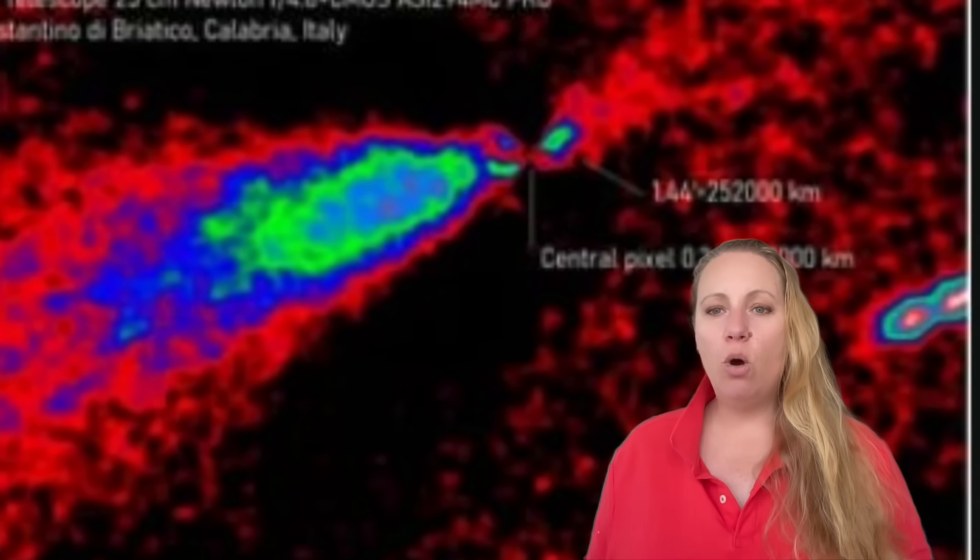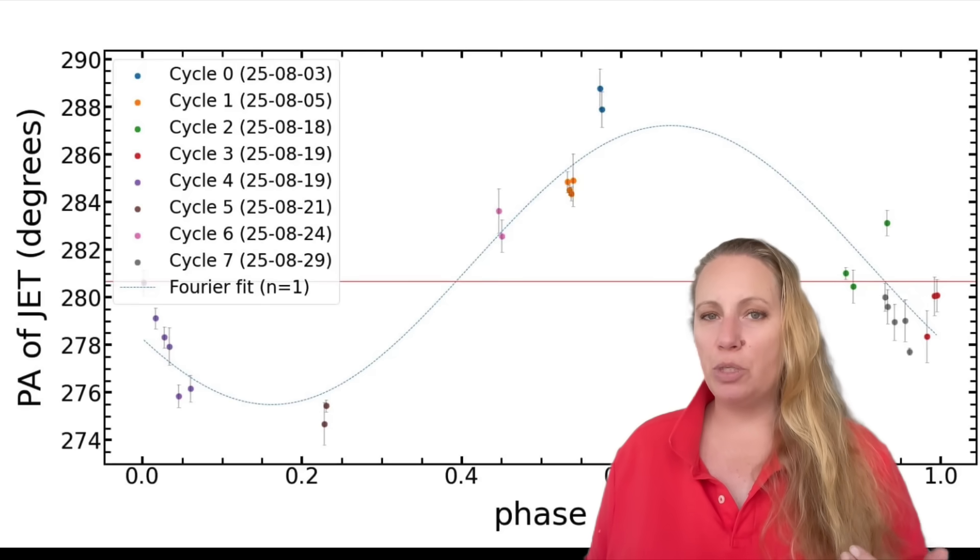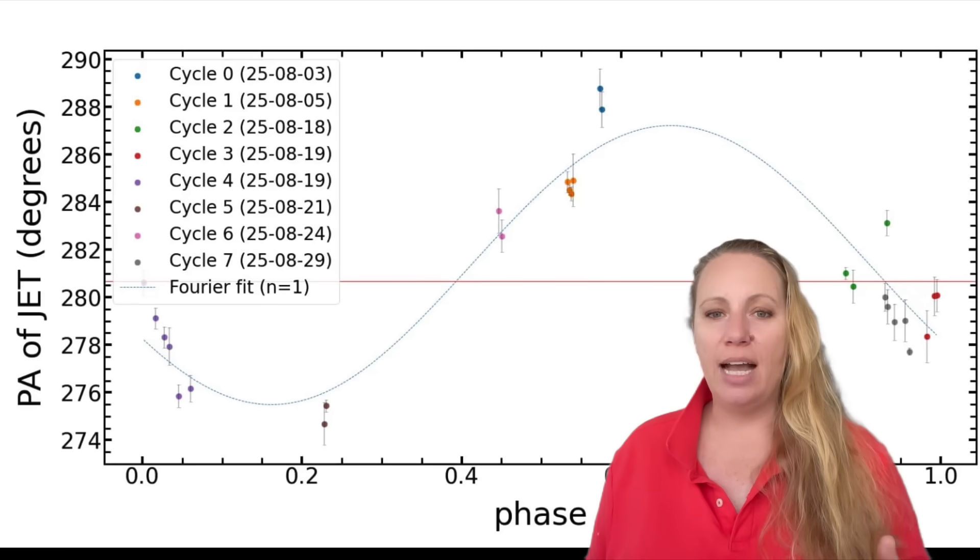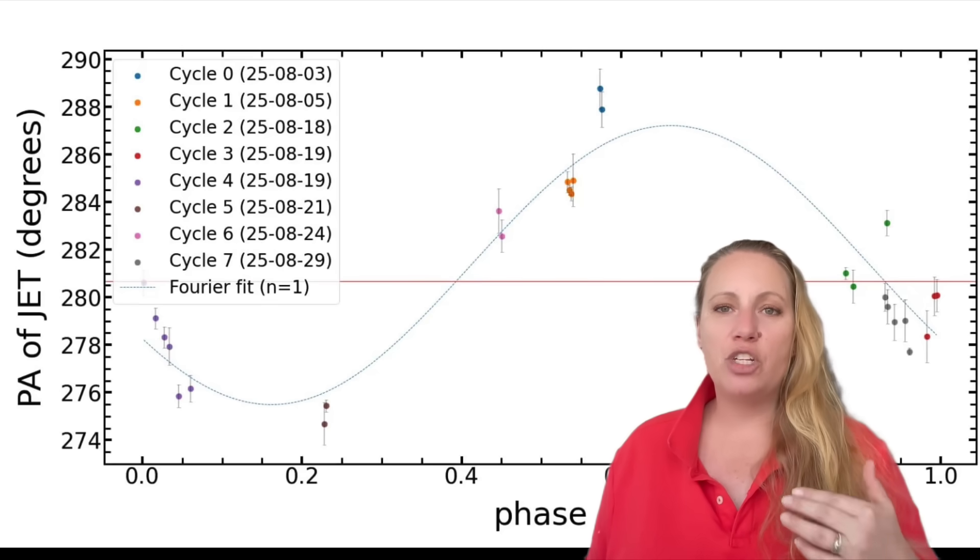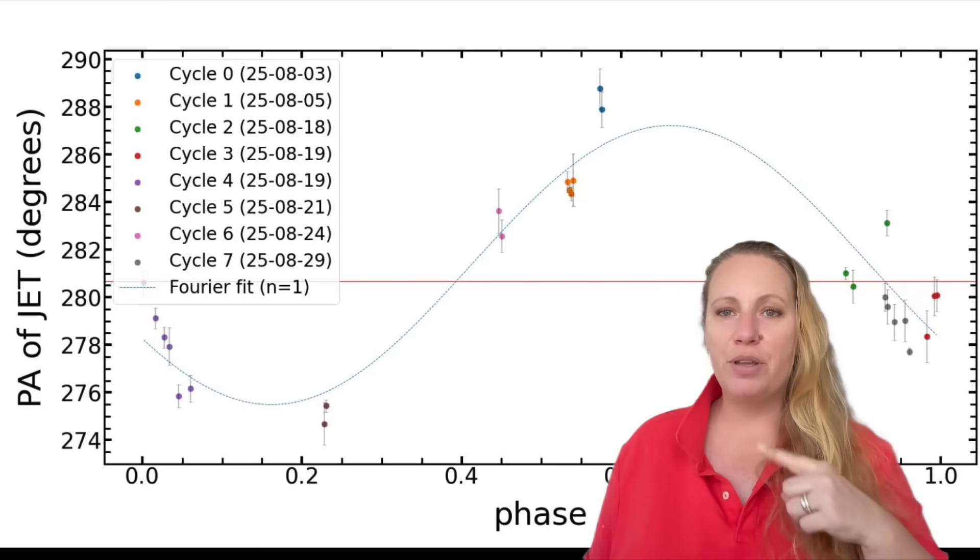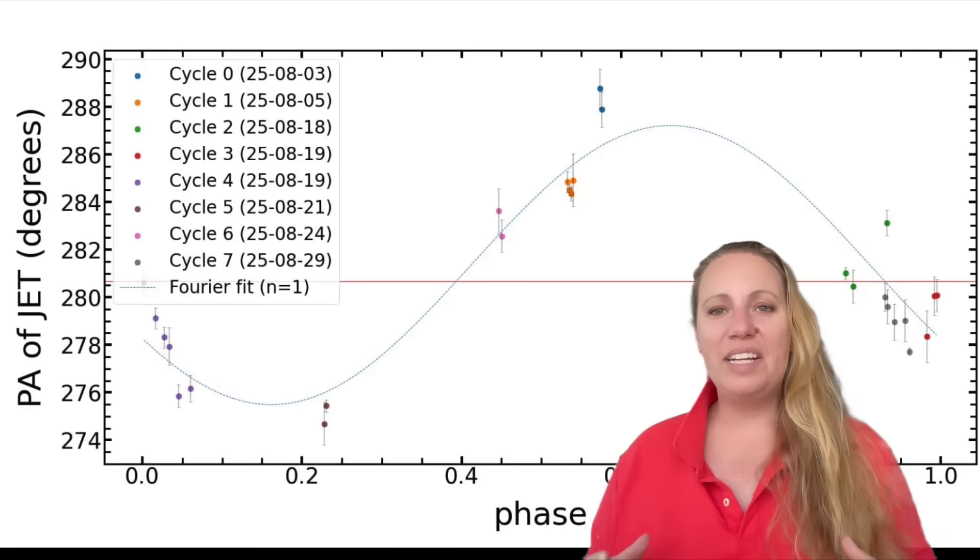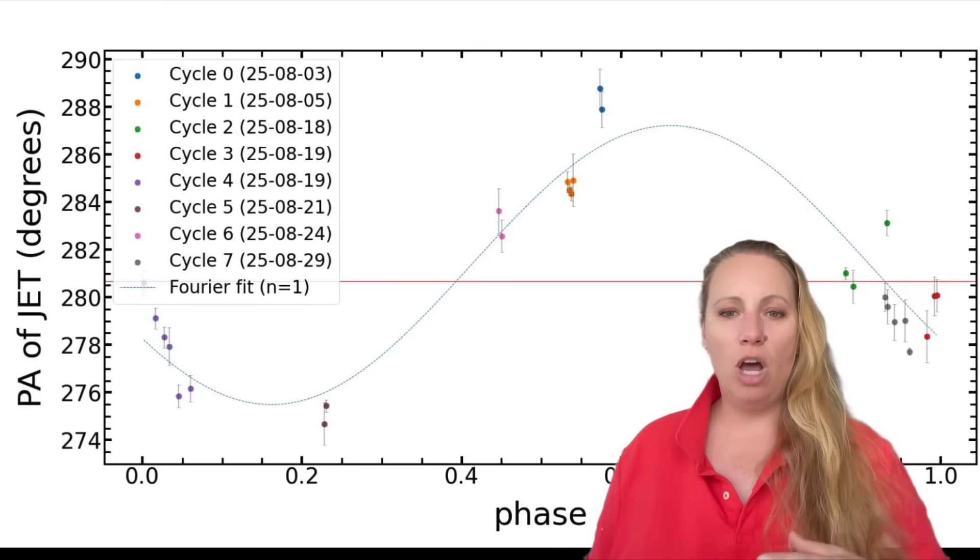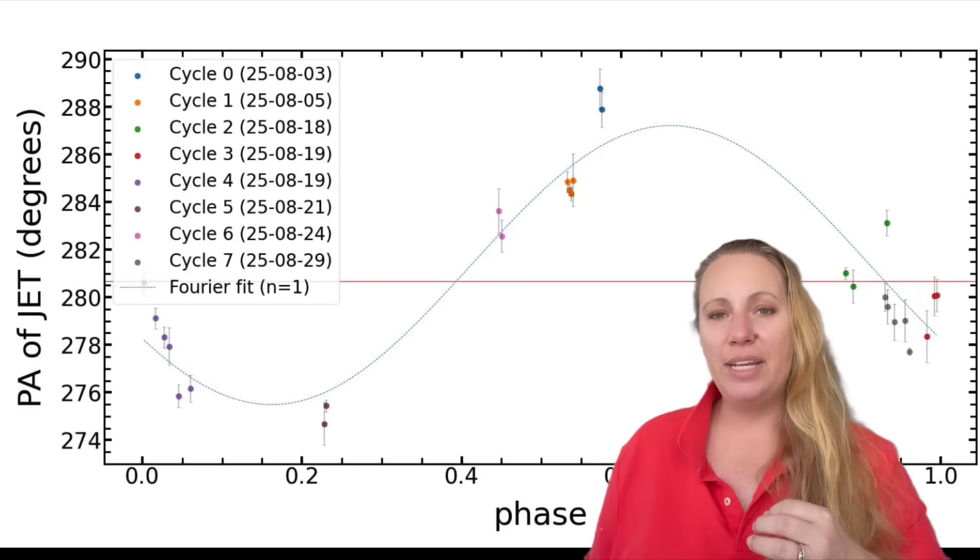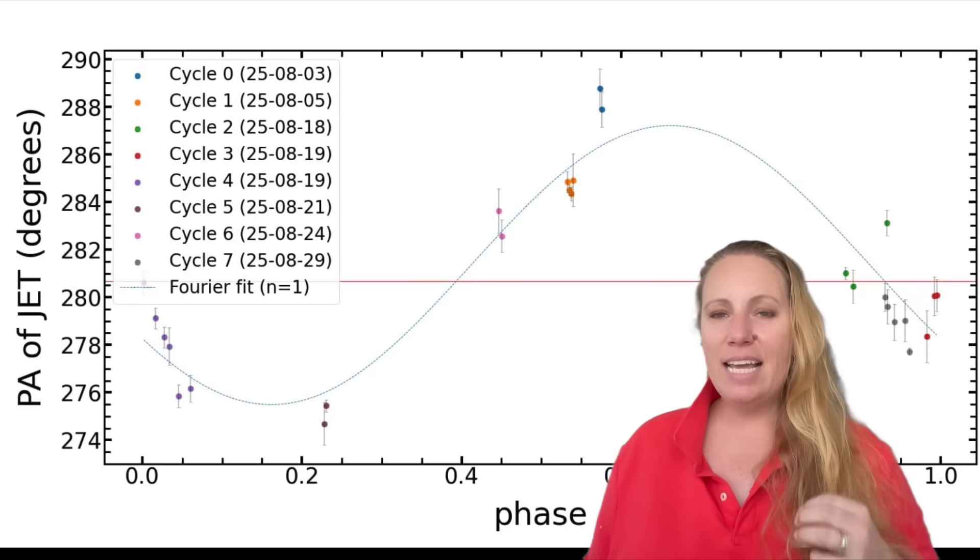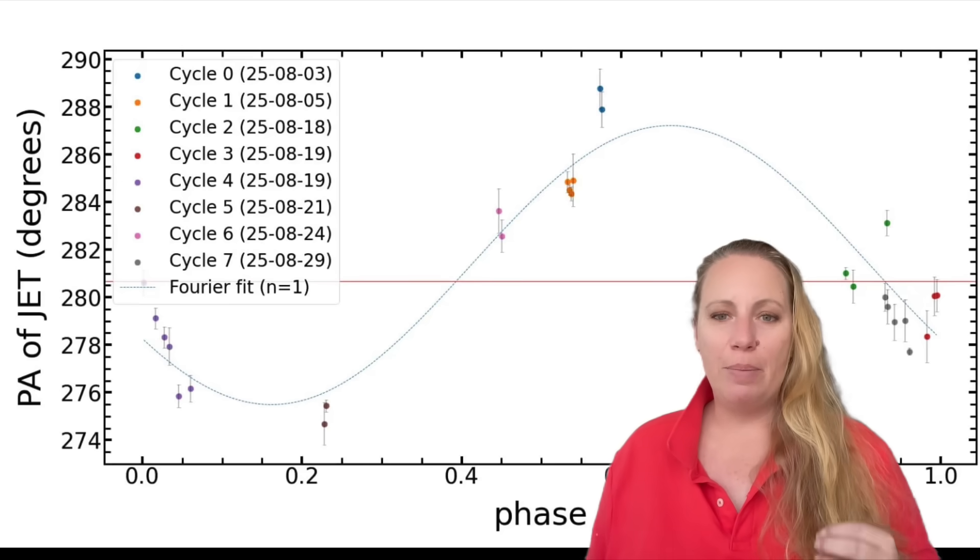Let's have a quick look at the red horizontal line. The red line is the average position angle. This represents the projected direction of the rotation axis of 3i Atlas on the sky. In other words, this is the average spin direction around which everything is wobbling. And now as a whole, what is this image really showing? This plot shows that the anti-tail does not point in a fixed direction. It slowly swings back and forth and it does so in a regular pattern. The pattern matches a 7.7 hour rotation.